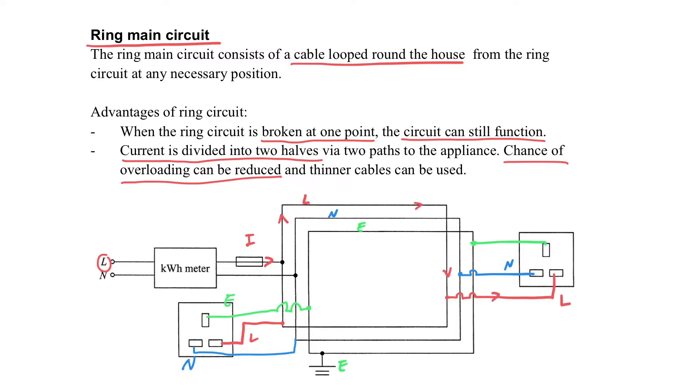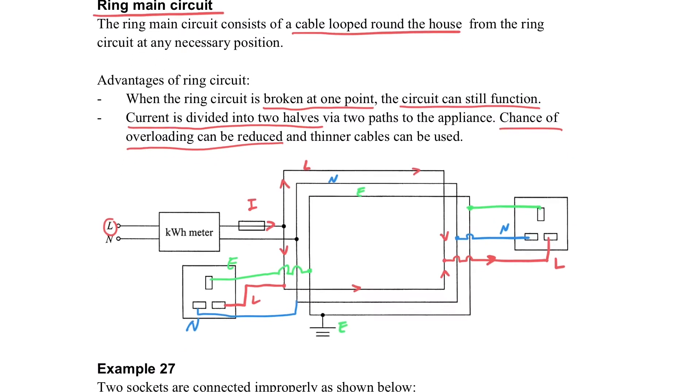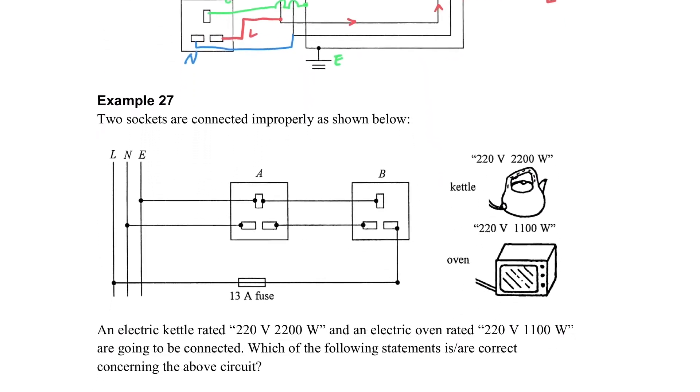Now you can see that it can be passed from the left side, but it can also pass from the right side because it's a ring, right? This is the meaning of divide the current into half.